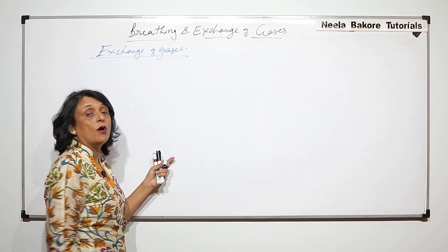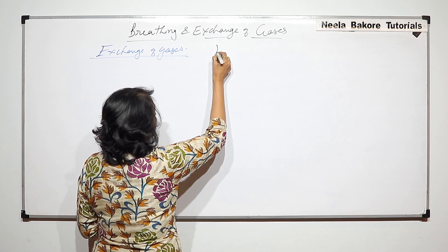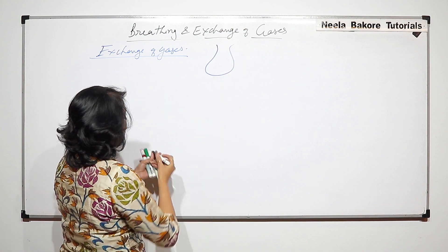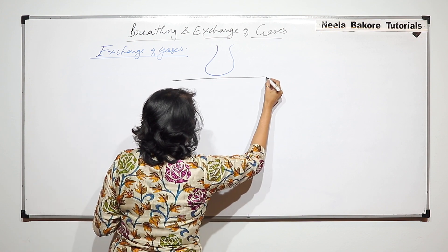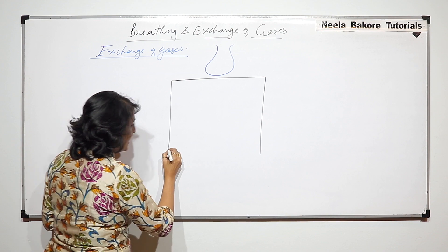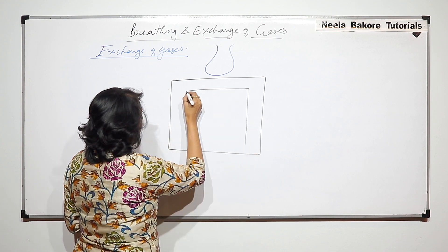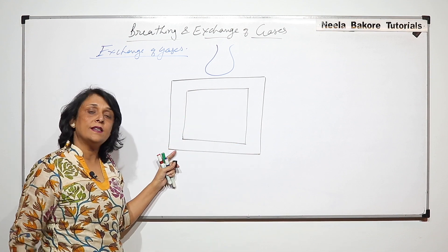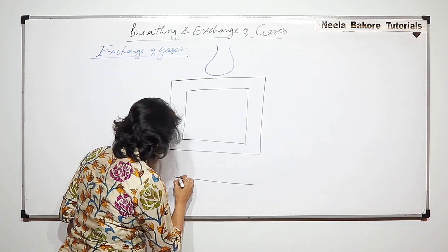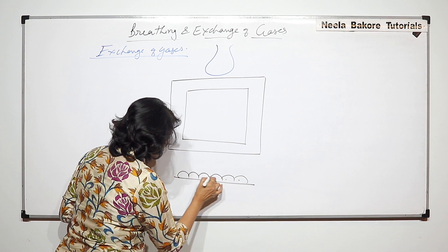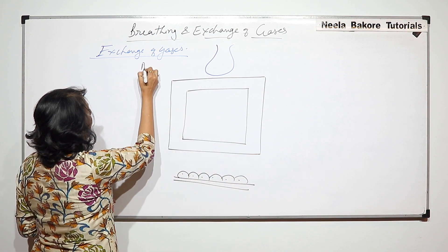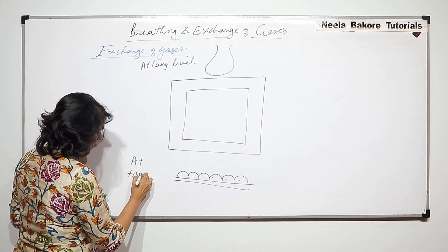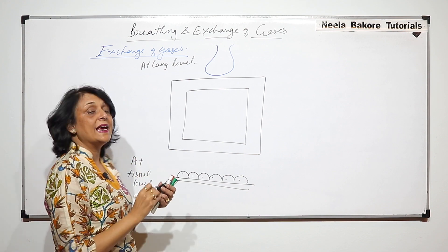To understand this process, we will discuss the exchange of respiratory gases — oxygen and carbon dioxide. We will use a schematic diagram showing an alveolus and a representation of the circulatory system, so that all the values and processes are clearly understood. This square structure represents the circulation, and here we are also showing the tissues. Exchange occurs at two levels: lung level and tissue level.